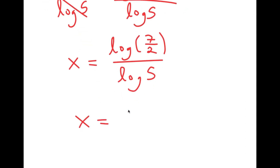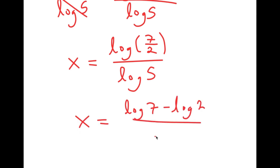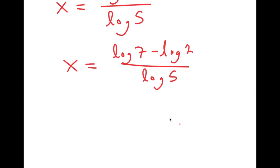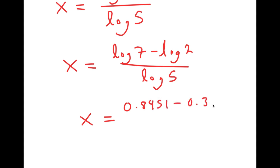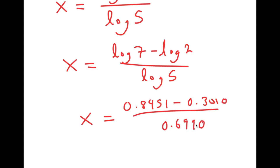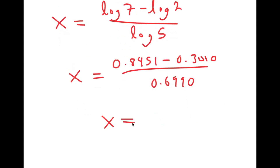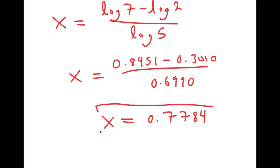This turns into log of 7 minus log 2 over log 5, which is equal to 0.8451 minus 0.3010 over 0.6990. And this is equal to approximately 0.7784. So this is my answer.